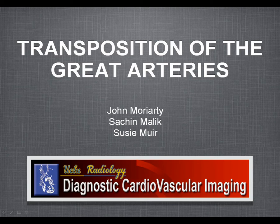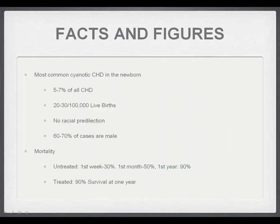Today I'm going to be talking about Transposition of the Great Arteries, following on from our first podcast on Tetralogy of Fallot. This is the most common cyanotic congenital heart disease in the newborn and second overall after Tetralogy, encompassing 5-7% of all congenital heart disease, more common in males than females. While untreated it has a mortality of 90% in the first year, treated it has a survival of 90% up to that first year.